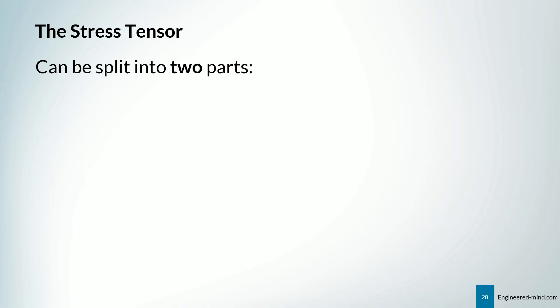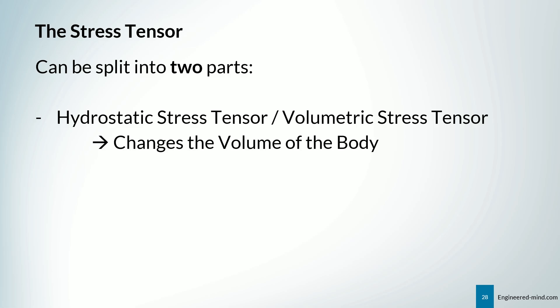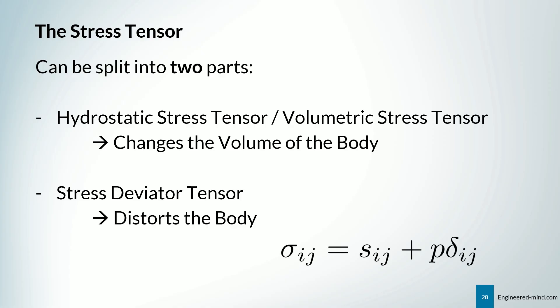So the stress tensor can be split into two parts. The first part is the so-called hydrostatic stress tensor or volumetric stress tensor. This part of the stress tensor changes the volume of the body. And we have the so-called stress deviator tensor, which distorts the body. And we can write it like that, where the stress deviator is Sij and the stress tensor is Pdeltaij.